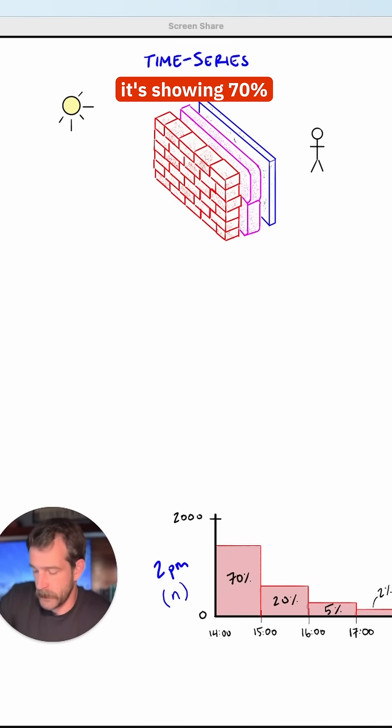So for this wall assembly, it's showing 70% will be transferred in the first hour, 20% in the second, 5% in the third, and so on. So at 2 p.m., we'll call it in. 70% of that 2000 BTU total will enter the space. That comes out to 1400 BTUs.